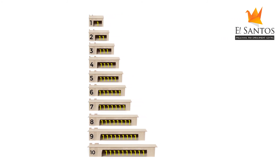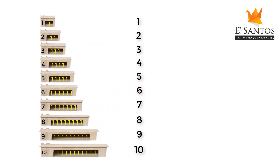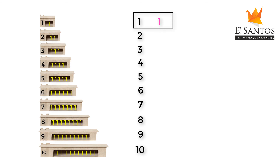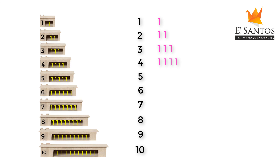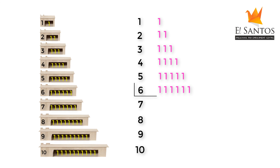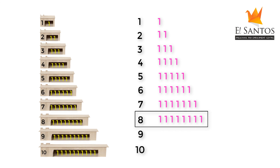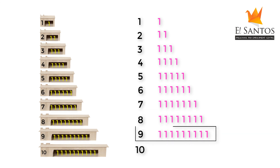Let's revise. This time we will not use the word 'house.' One has one. The number two has two ones. The number three has three ones. The number four has four ones. The number five has five ones. The number six has six ones. The number seven has seven ones. The number eight has eight ones. The number nine has nine ones. And the number ten has ten ones.